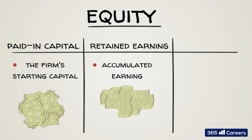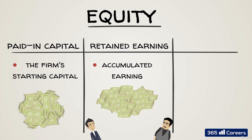Retained earnings. These are the profits that have not been distributed as dividends, and the firm has accumulated as equity. Think of these as sort of a reinvestment on behalf of shareholders — they have decided they don't want to distribute dividends.